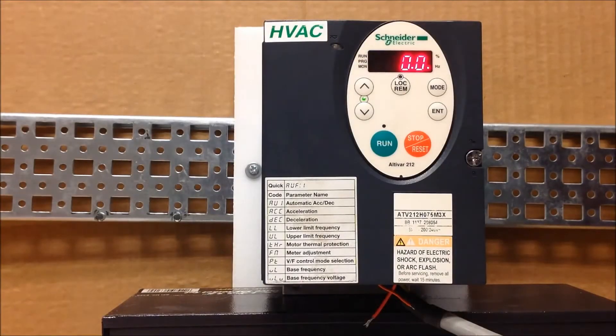This video will show you how to program reference switching functionality on the ATV212 drive. When we're talking about reference switching, we're talking about switching your reference channels, meaning your speed channels, not your command. Your command is going to still stay the same as whatever that CNOD parameter is programmed at, which is your command mode selection. This is strictly reference switching in means of a speed reference.